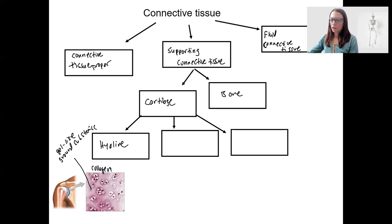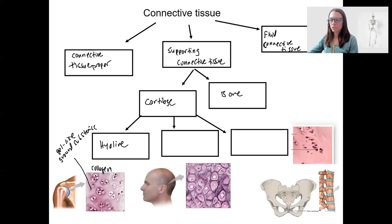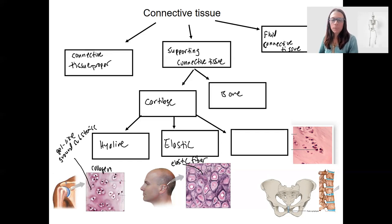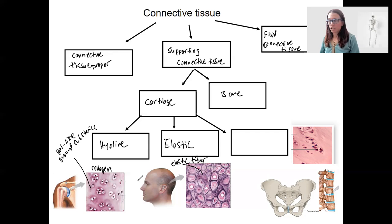Next we've got elastic cartilage. You can see the elastic fibers in the slide — the main reason I have you look at this in lab is so that you have a place where you can see what elastic fibers look like, since elastic fibers are also located in areolar tissue but are hard to identify there. Elastic cartilage is actually located in the ear, so it's a little bit stretchier than hyaline cartilage — literally because it's elastic, stretchy.